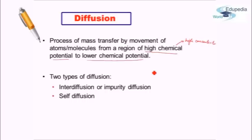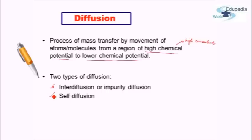What are the different types of diffusion? Broadly speaking, there are two different types of diffusion. One is interdiffusion, alternatively known as impurity diffusion, and second is self-diffusion. Interdiffusion means that we have a particular material, let's say iron, and if there are some carbon atoms present in it, then the carbon atoms may diffuse from one region to another region. Such diffusion is called interdiffusion or impurity diffusion because the bulk in this case is iron, but within the iron the carbon, which is the impurity atom, is diffusing.